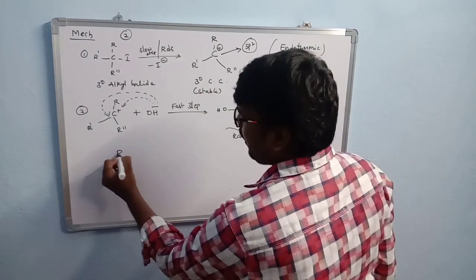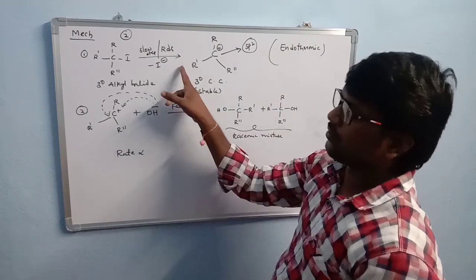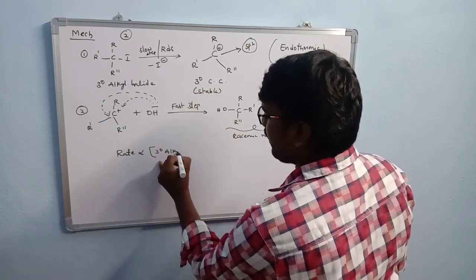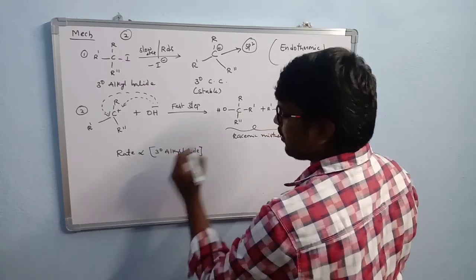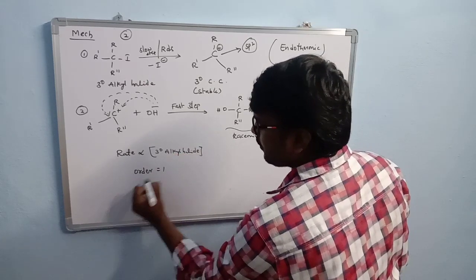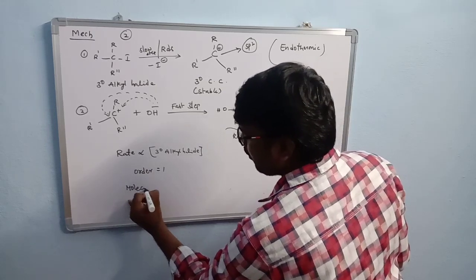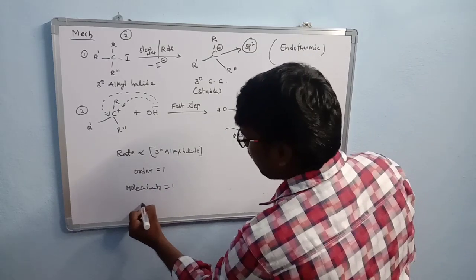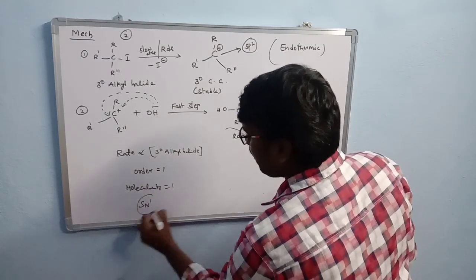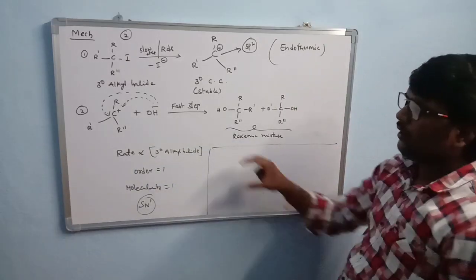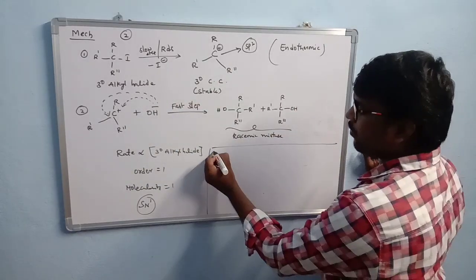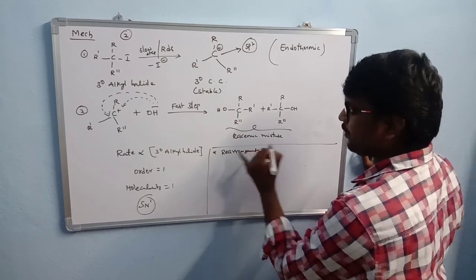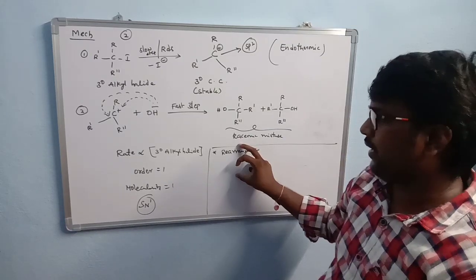When writing the rate of this reaction, rate depends on the slow step. In the slow step, only the tertiary alkyl halide participates. Therefore, the order of this reaction is 1 and the molecularity is also 1, because only one molecule participates. That's why it is called SN1 reaction. In SN1 reaction, rearrangement takes place because there is a possibility of carbocation rearrangement.